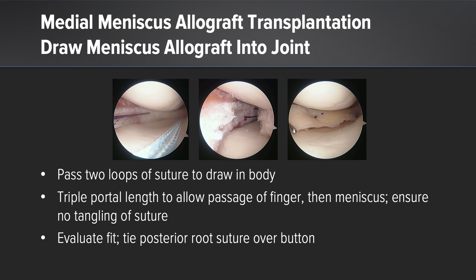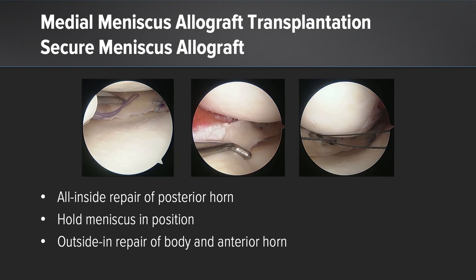I double or triple the portal length to allow passage first of my finger, then of the meniscus, to ensure no tangling of the suture. Then I evaluate the fit before tying the posterior root suture over a metallic button.